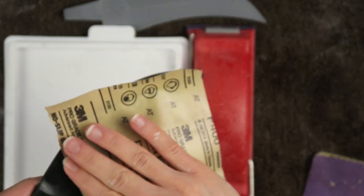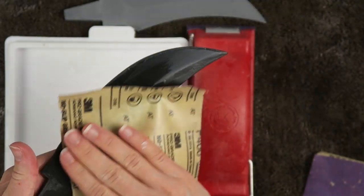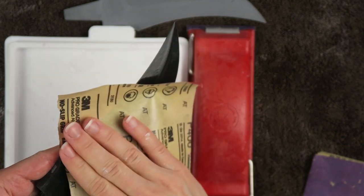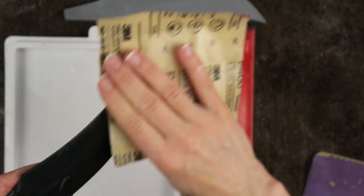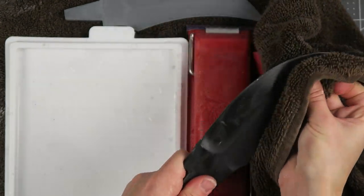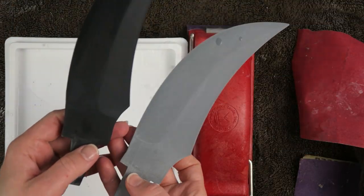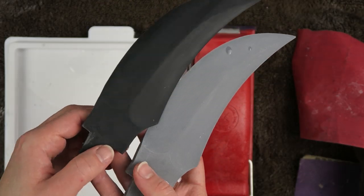Then the very last part I switched over just to sanding without the block with some 400 grit paper just to ensure that there were no burrs left on the edges. There's both versions all smoothed out and ready for paint.